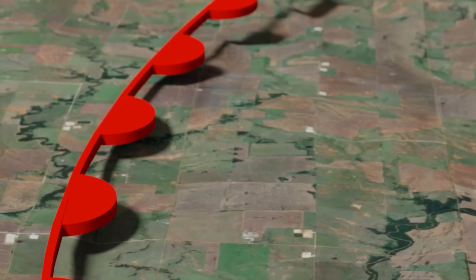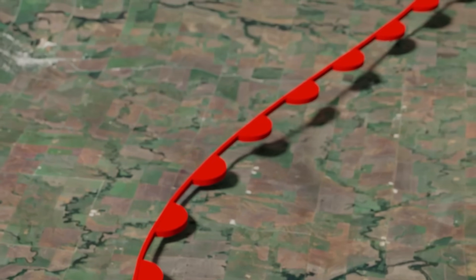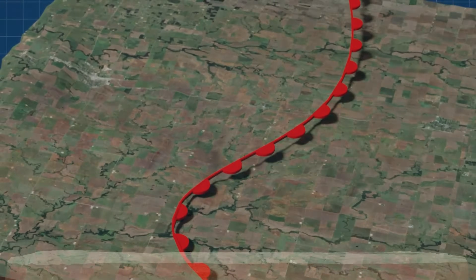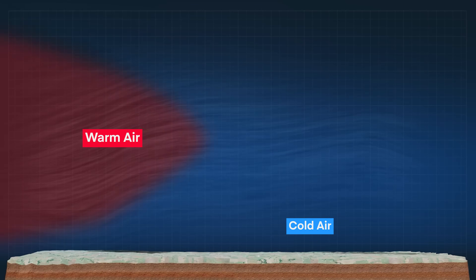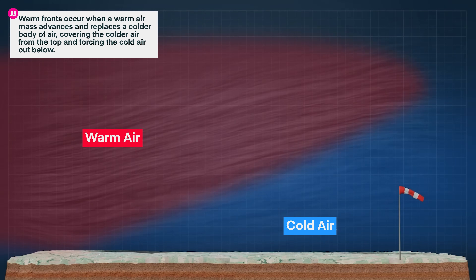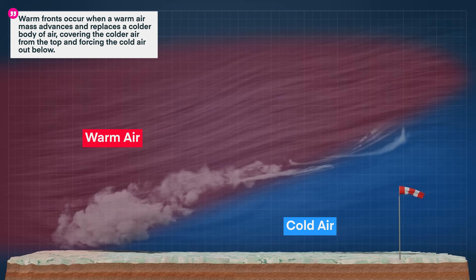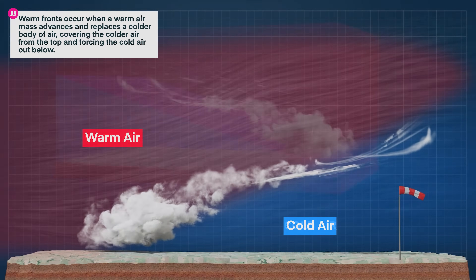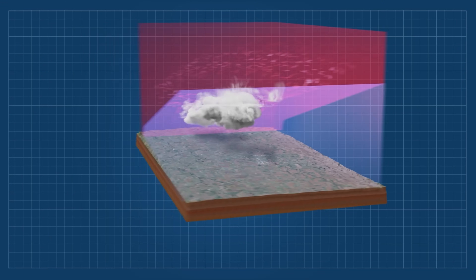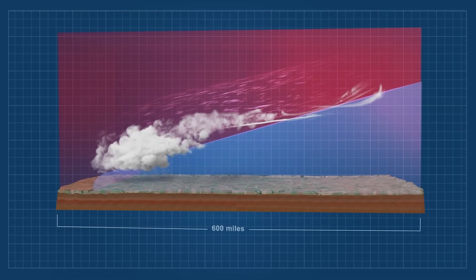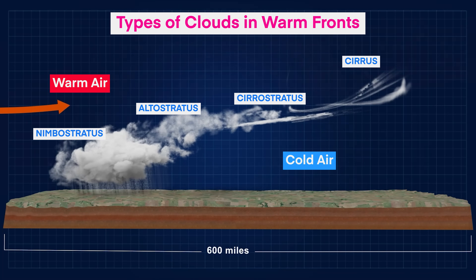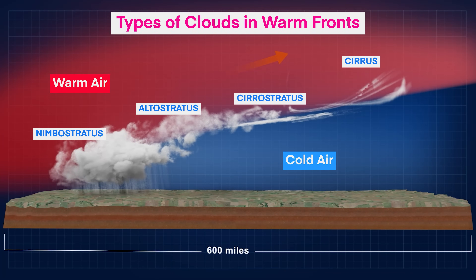A warm front occurs when a warm air mass advances and replaces a cold body of air, covering the colder air from the top and forcing the cold air out below. This type of front moves rather slowly, typically around 10 to 15 miles per hour. Warm fronts generally have high humidity, and because the air is forced upward by the frontal change, you'll see stratiform and cirrus type clouds, and also some fog can be expected.